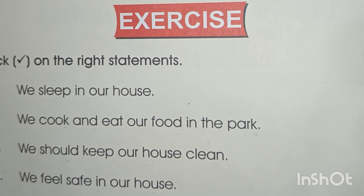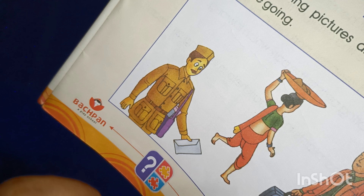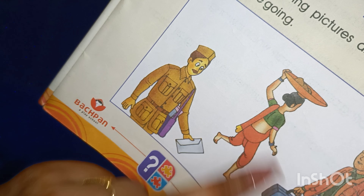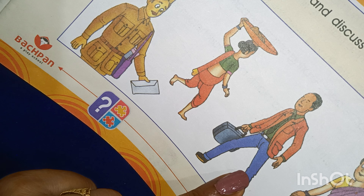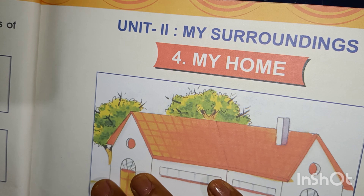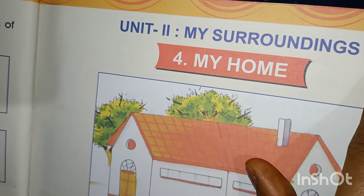The last question is: look at the following pictures and discuss where these people are going. There are several people going somewhere. This person is a postman — he is going to deliver letters. This is a vegetable seller — she is going to sell vegetables. And this is a doctor.